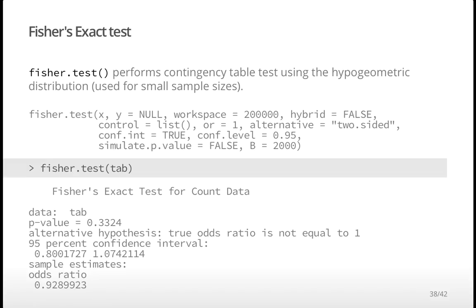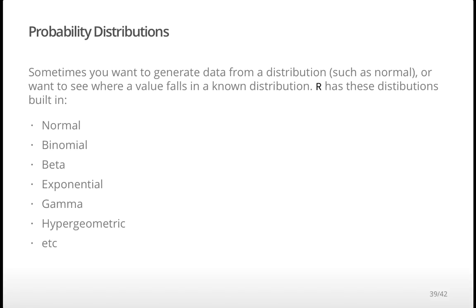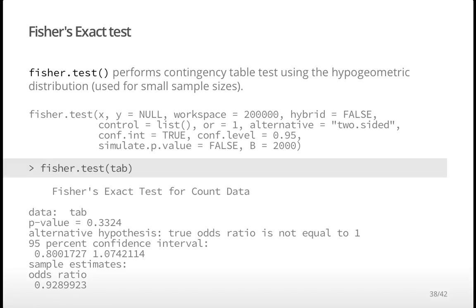Fisher's exact test is generally preferred for contingency tables — especially two-by-two or small tables. Use `fisher.test(table)`. The rule of thumb: if expected cell counts are below 5, chi-square is a poor approximation. Fisher's exact test is not an approximation — it gives exact p-values with no normality assumption. It is slightly more conservative, but the results are very close to chi-square when sample sizes are large.